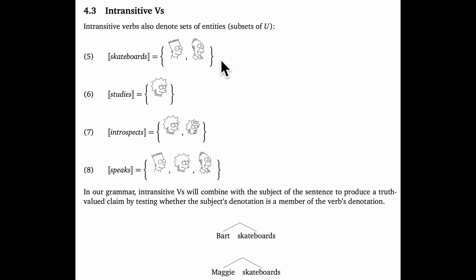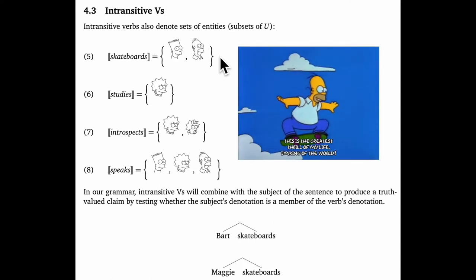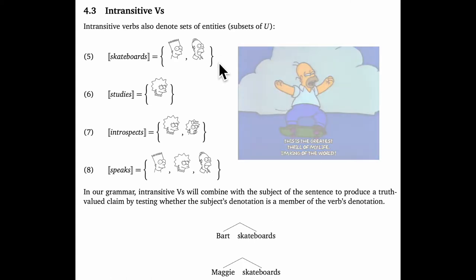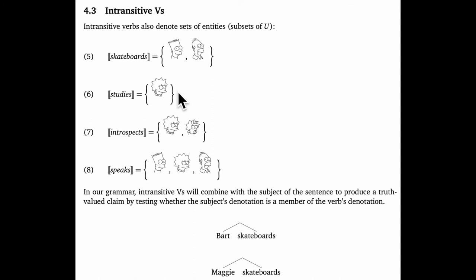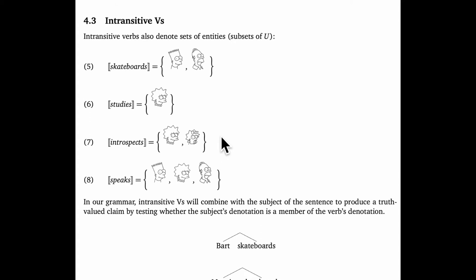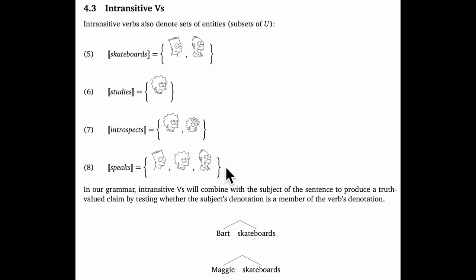Homer and Bart skateboard. Bart is the canonical skateboarder, but Homer famously jumped Springfield Gorge on a skateboard, so I included him. Lisa is a great student and Bart is not. Lisa and Maggie lead thoughtful introspective lives, whereas Bart and Homer tend not to. And of course, Maggie doesn't say a word.